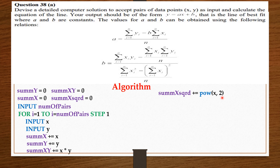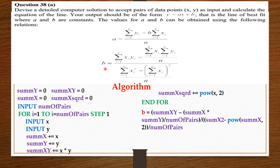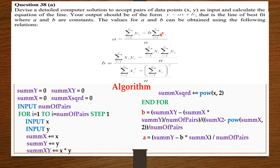From here, we end our for loop. This for loop will continue to run from 1 to the total number of pairs. Each time it runs, the user will be asked to enter x and y data points, which will be stored in these variables. From here, we calculate b: b equals summation of xy minus summation of x times summation of y, all divided by n, divided by summation of x squared minus summation of x to the power of 2, all divided by n, where n is the number of pairs. Having b, we calculate a: a equals summation of y minus b times summation of x, all divided by n.